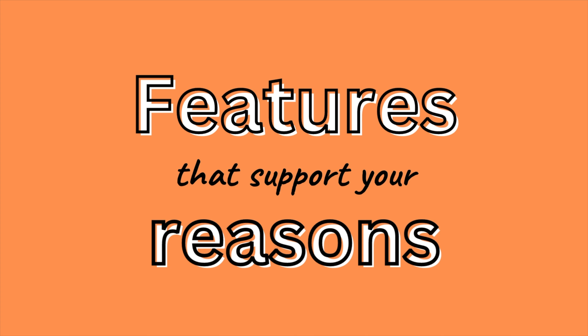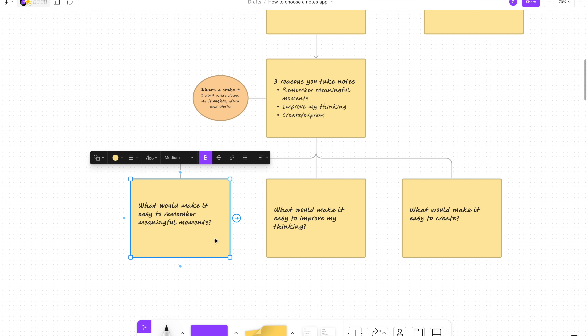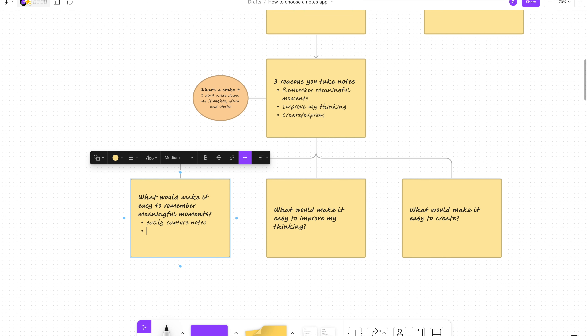The idea here is to start thinking about the features that would support your reasons. We don't want to start with features first and chase those — we want to start with why. Using my example of three reasons — remember meaningful moments, improve my thinking, and create or express — here's how it looks. For remembering meaningful moments: I need easy quick capture, a simple UI, not a lot of fluff, fast and efficient usage, and maybe the ability to add photos.